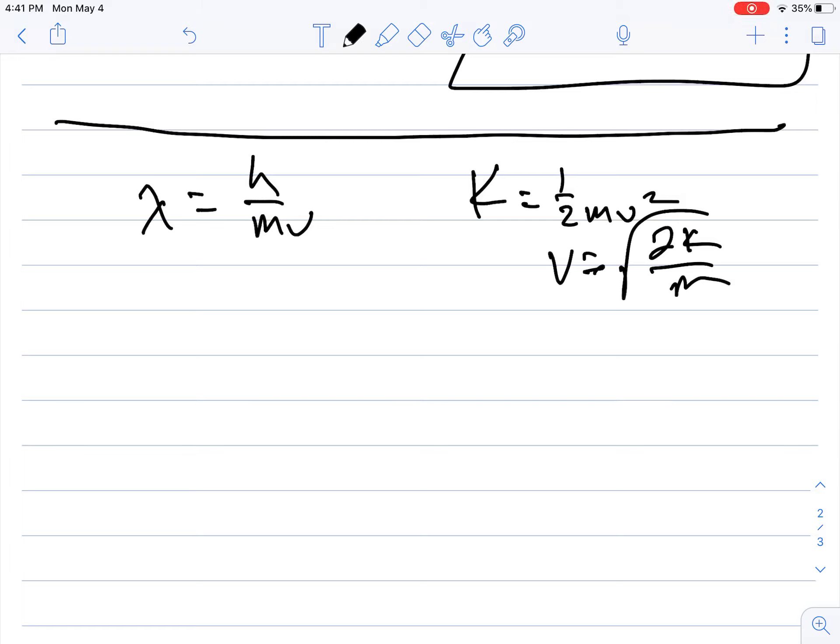Okay, so it looks like the recording is working again. So let's continue on with this lecture. I was gonna scream if it didn't work. Okay, so if we do a little bit of substitution and put this in here for the velocity, we get lambda equals h over m times the square root of 2k over m.